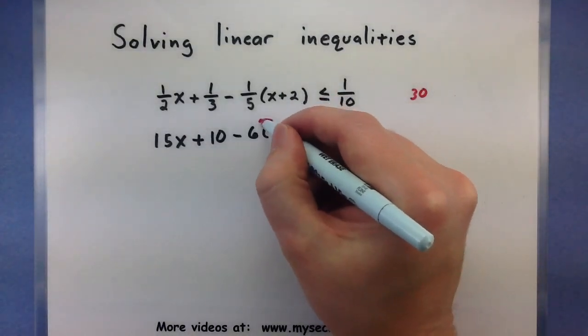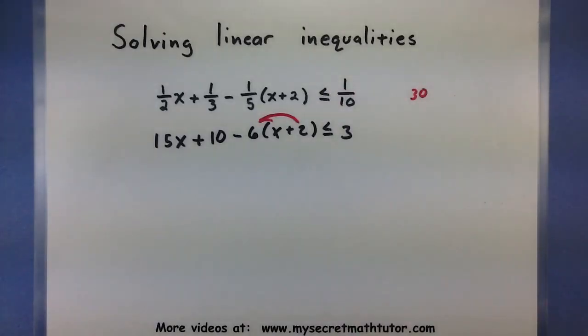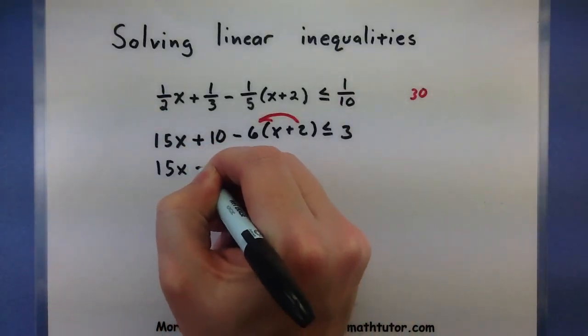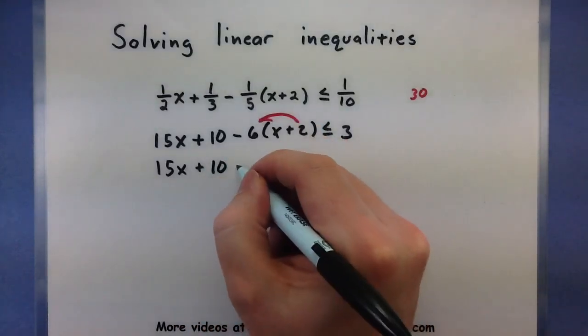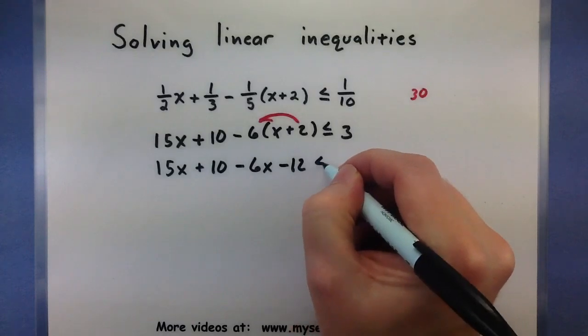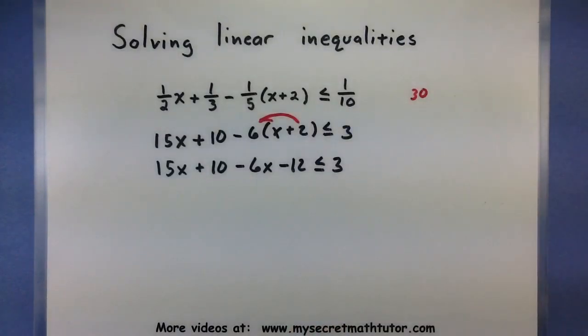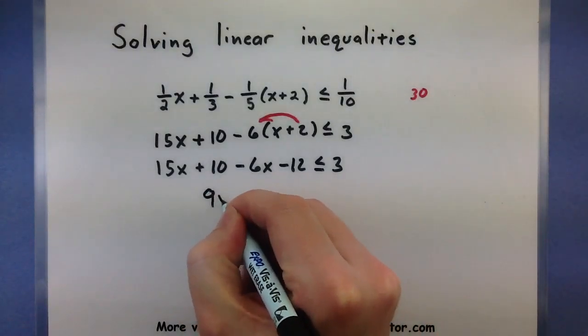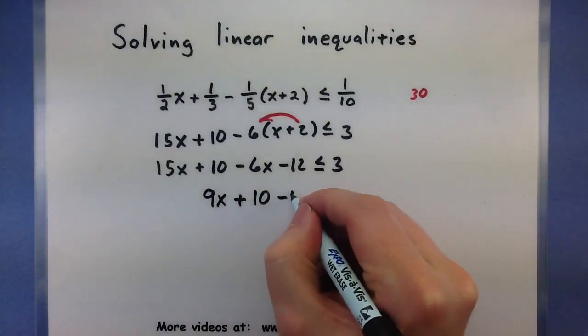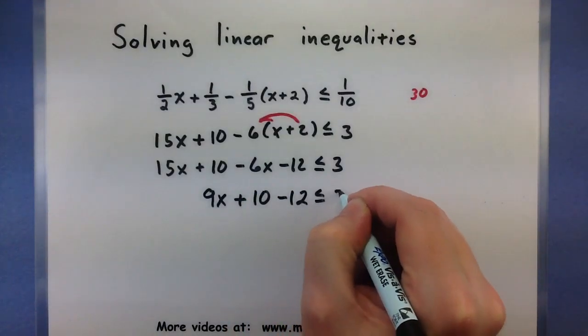Let's continue working to get our x's together by distributing that 6 in. So 15x plus 10 minus 6x minus 12 is less than or equal to 3. Alright, looks good. Combining the 15 and the 6, that will give me 9x plus 10 minus 12 less than or equal to 3.